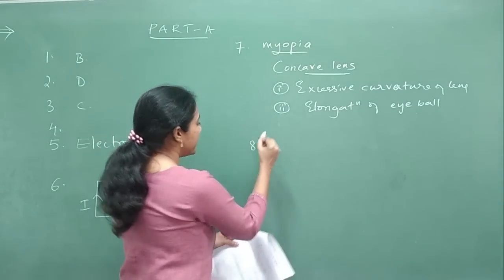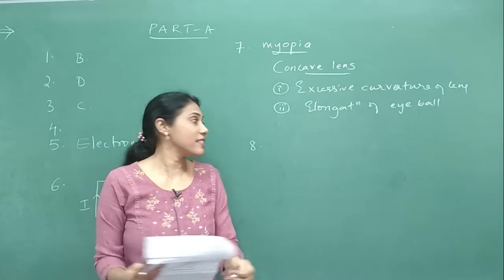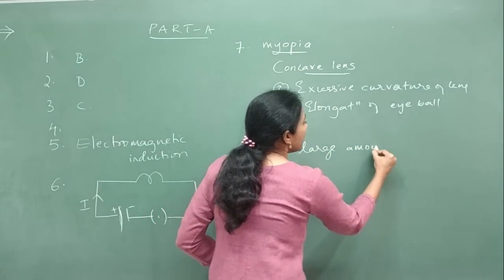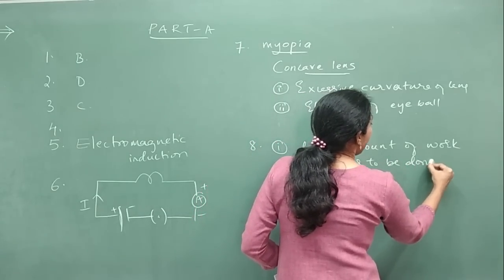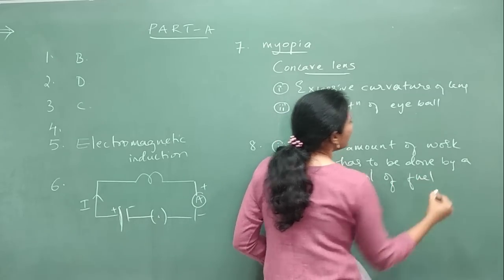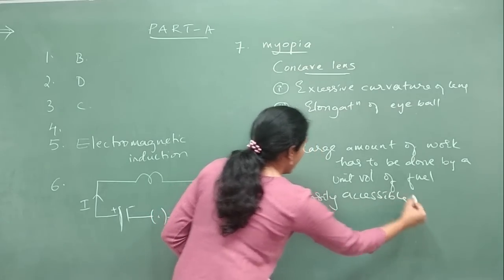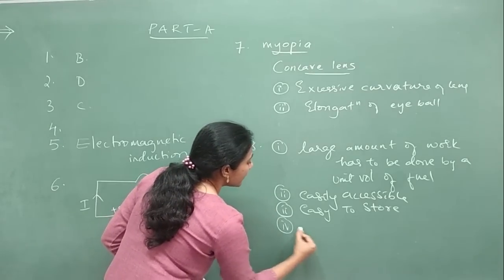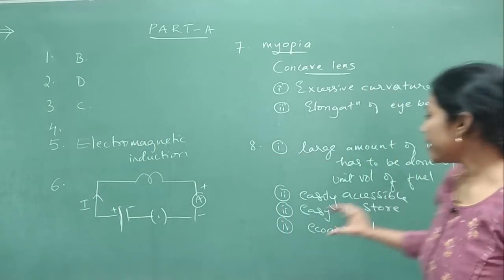Question number 8: write four characteristics of a good source of energy. Point one: a large amount of work should be done per unit volume or unit mass of fuel. Point two: it should be easily accessible. Point three: it must be easy to store and transport. Point four: it should be economical — that means cheaply available in the market. These are the four points you can write.